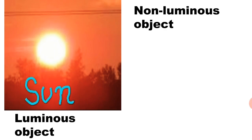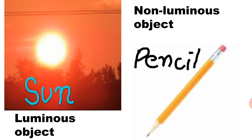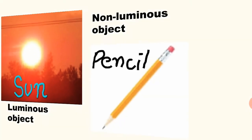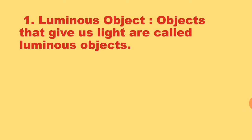The sun is a luminous object. A pencil is a non-luminous object. Objects that give out light are called luminous objects.